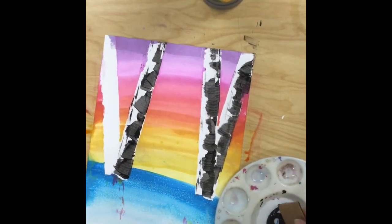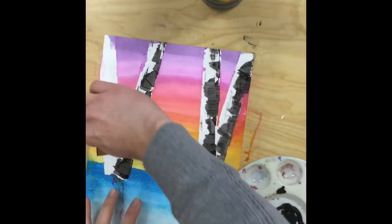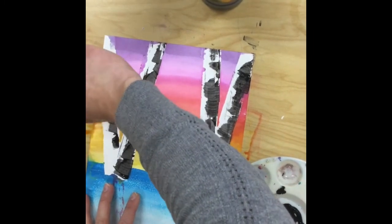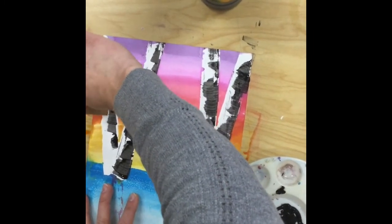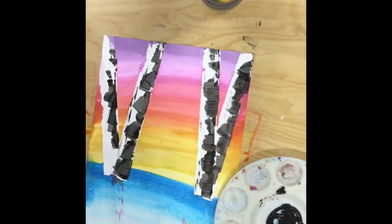By stamping the side of the cardboard on the remaining white area, you can create texture to make it look like the tree a little bit rougher.